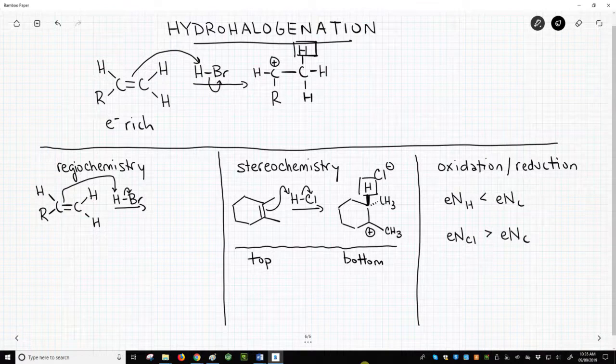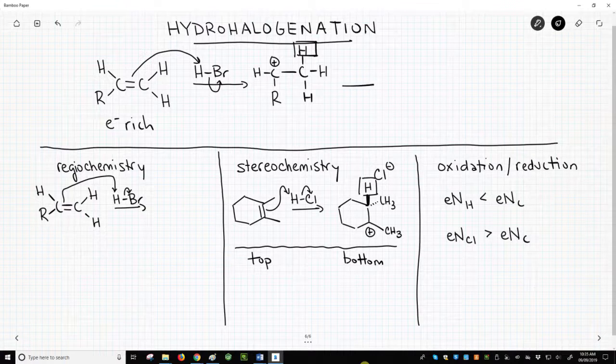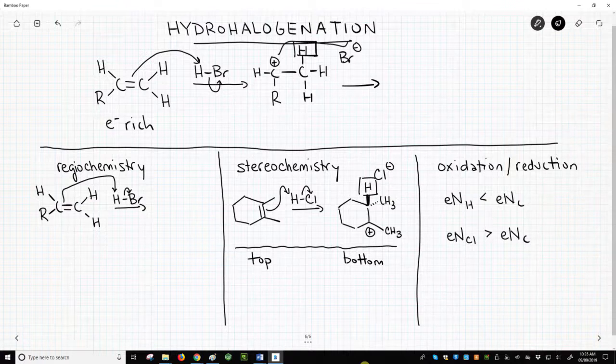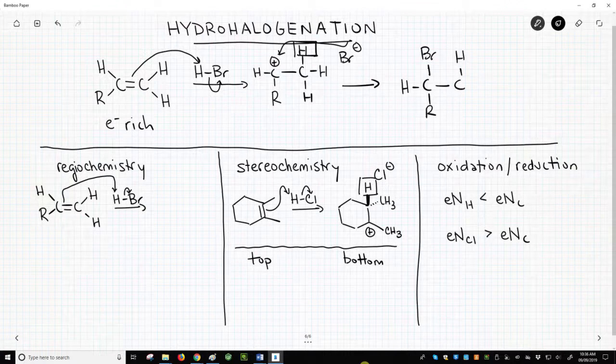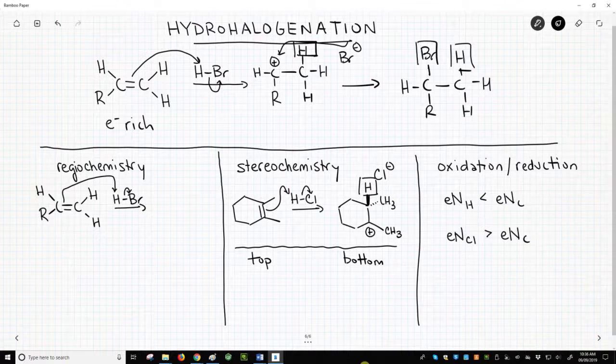What happens to carbocations? They are either attacked or they lose a beta hydrogen. We get attack if we have a nucleophile, even a weak one. Bromide, chloride, or iodide are all nucleophiles that will attack a carbocation. So we finish our reaction by attacking our carbocation. Our final product reflects the addition of a hydrogen and a bromine, a halogen, across the carbon-carbon pi bond.